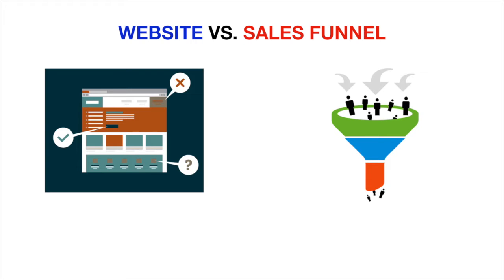Let me talk about the difference between having a website and having a sales funnel. A traditional website has a logo in the top section with a menu bar, sub-headers with drop-down menus, and pictures or links directing people to other pages. A sales funnel, on the other hand, is more direct — it usually consists of a landing page that offers the customer something valuable, like a free report on weight loss tips, a free video, or a discount off a product.